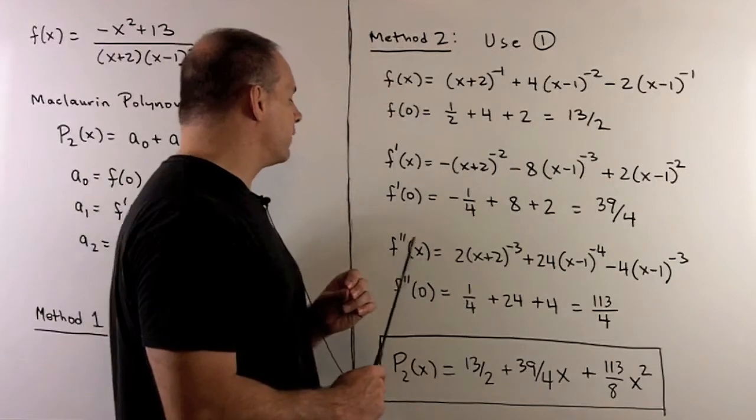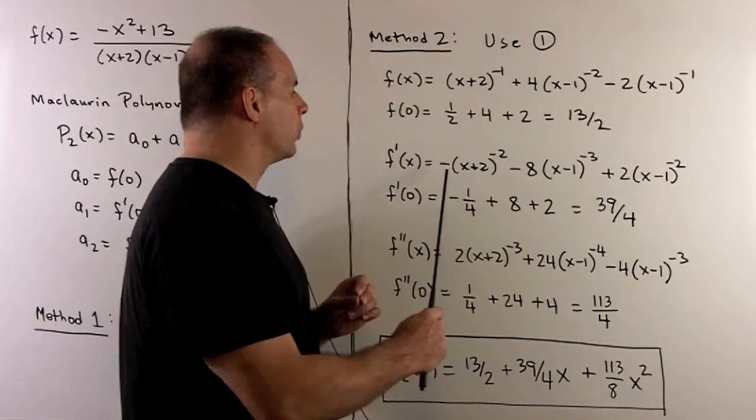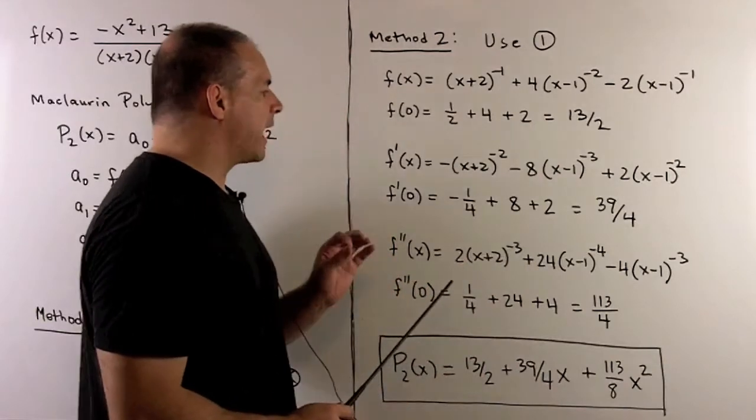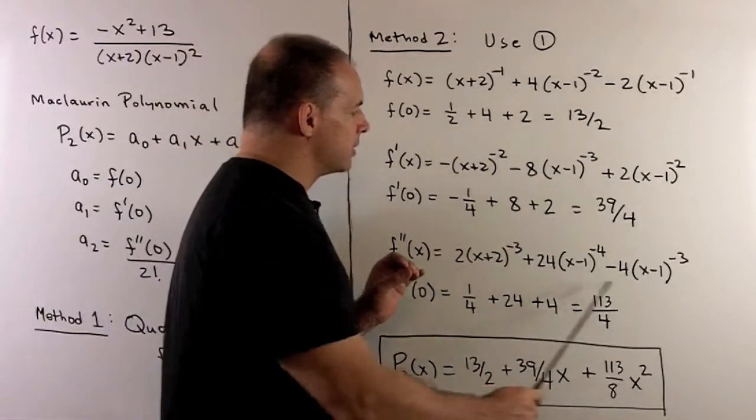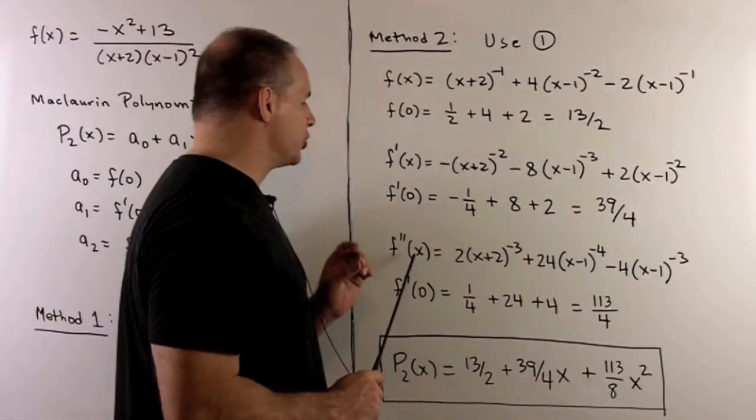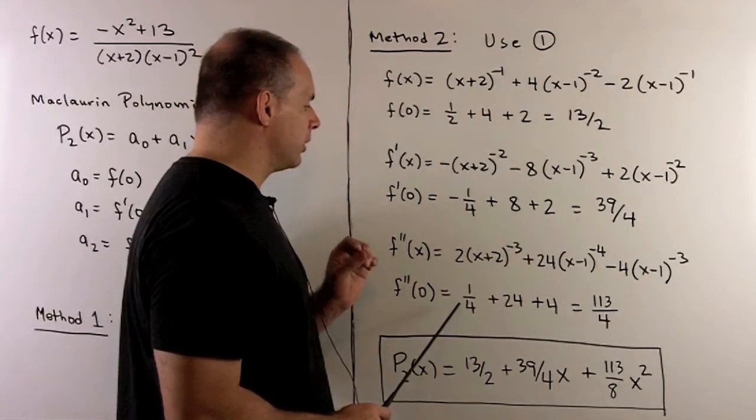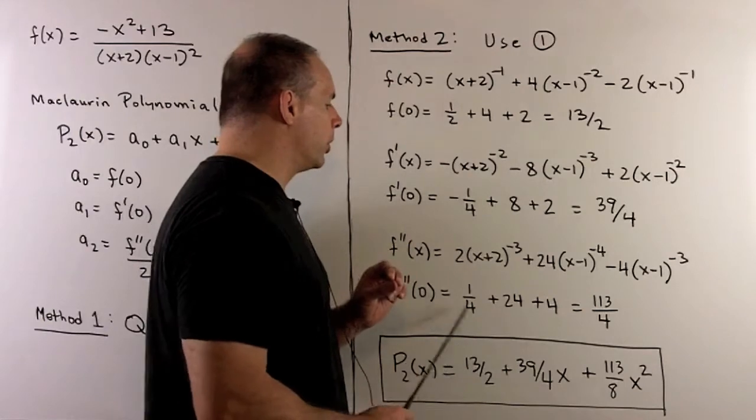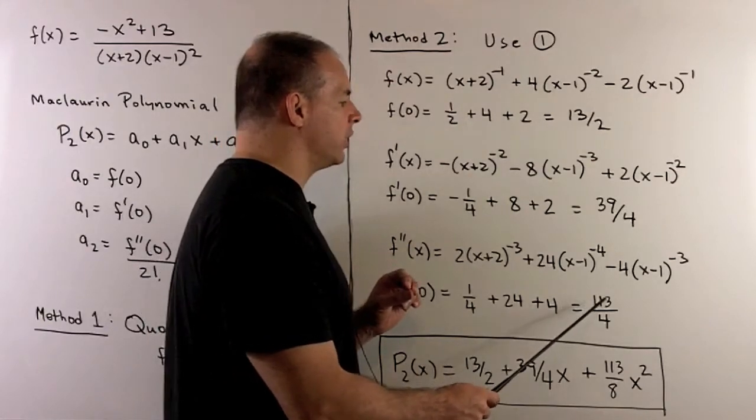For the second derivative of x, same idea. We're going to apply chain rule to these three terms. When we do that, we get this expression here. We put in our 0. What comes out is going to be 1/4 + 24 + 4, which when we put it over 4, gives us 113/4.